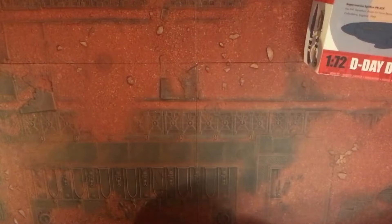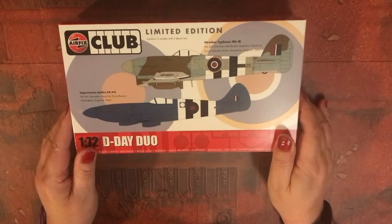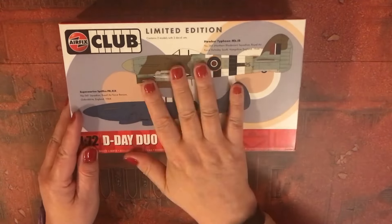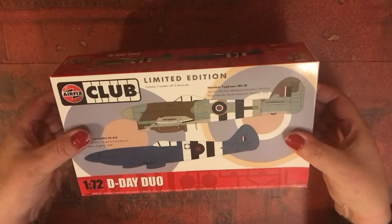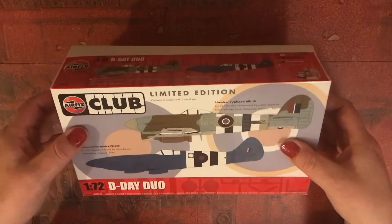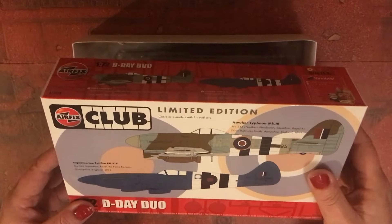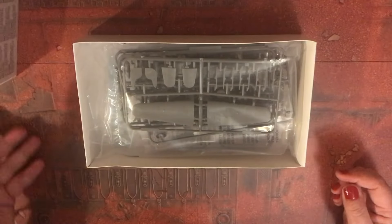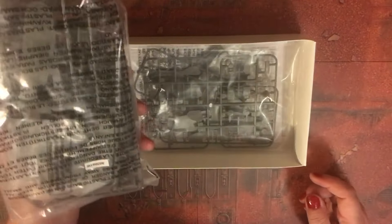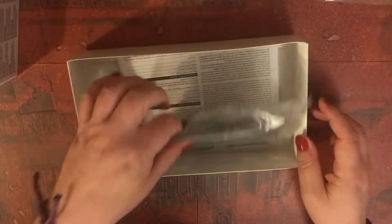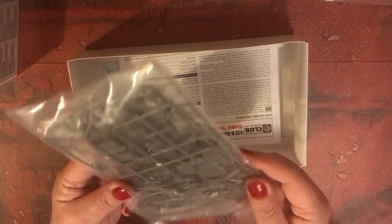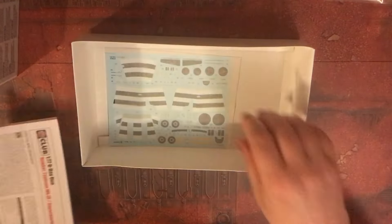But what we want to look at is the limited edition kit. These are existing kits but they are just given an exclusive finish, paint finish for club members. So you get this Typhoon kit and then this is your Supermarine Spitfire kit.